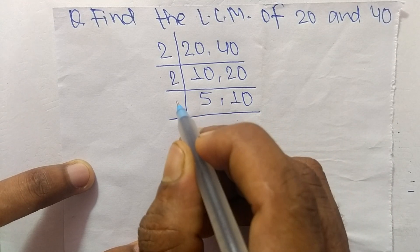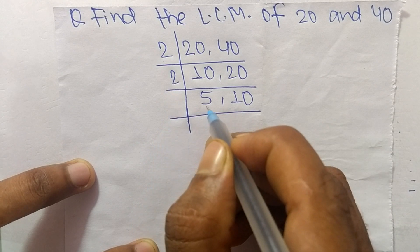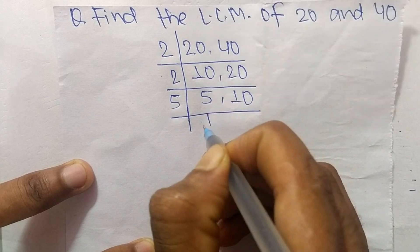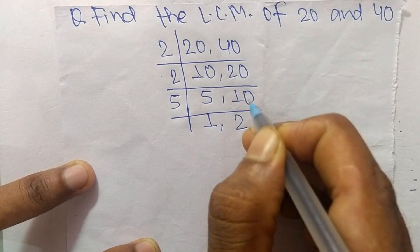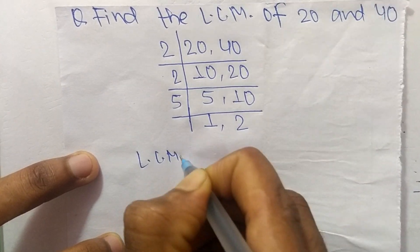So we take the number greater than 2 which can exactly divide 5 and 10. The number is 5. So 5 times 1 is 5 and 5 times 2 is 10.